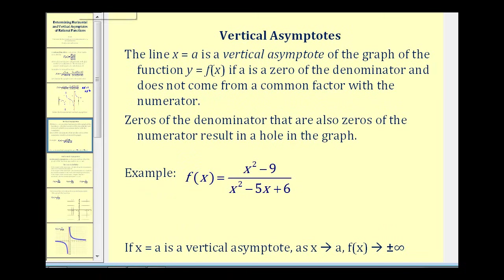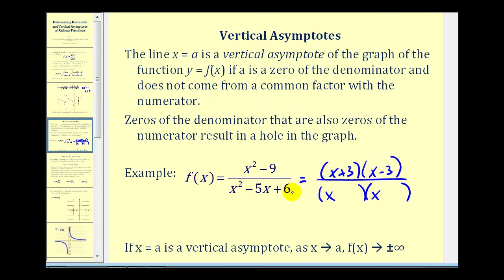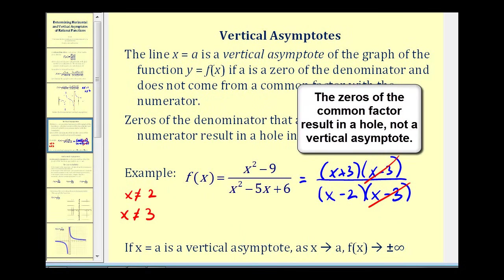For example, if we take a look at this function, the first thing we want to do is factor both the numerator and denominator. The numerator factors as x plus three times x minus three. The denominator factors as x minus two times x minus three. Notice there are two values that make the denominator equal to zero, so the domain must exclude x equals two and x equals three. But these both do not result in vertical asymptotes, because x equals three is also a zero of the numerator, so there's a hole at x equals three.